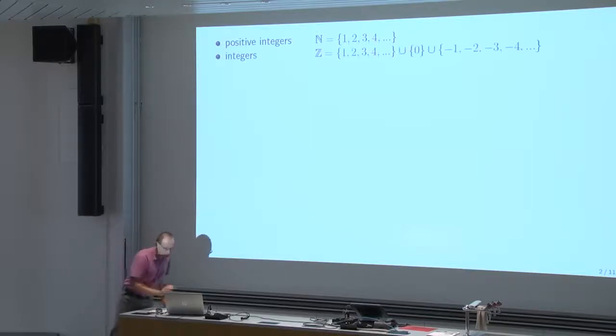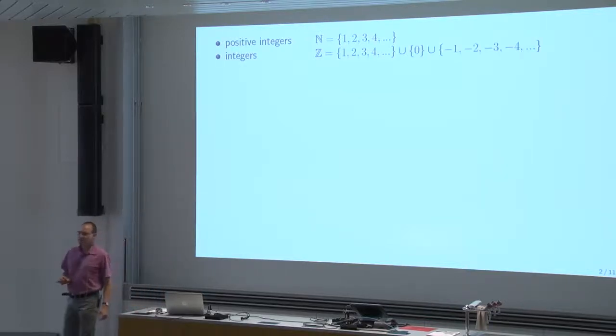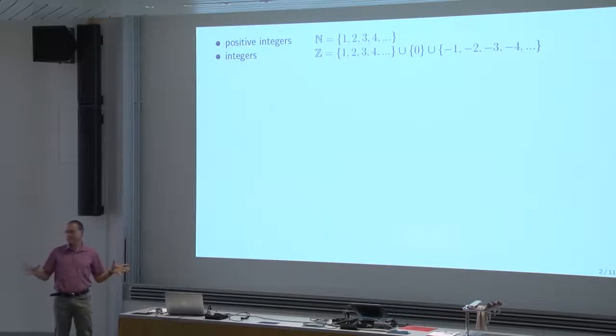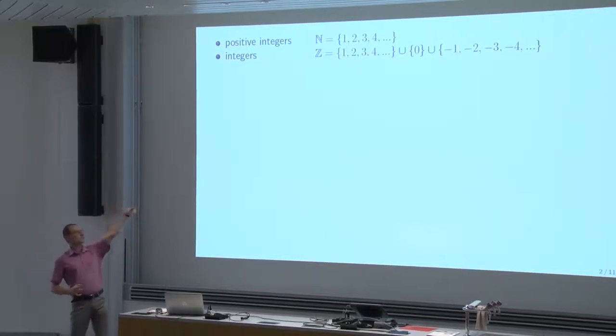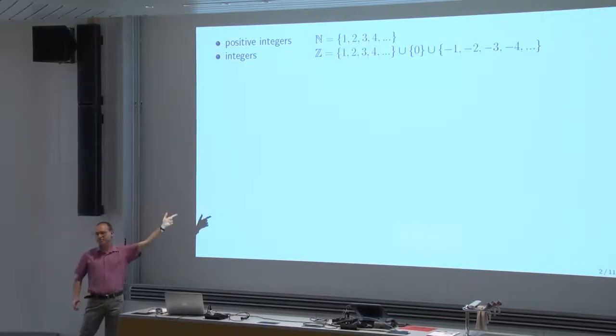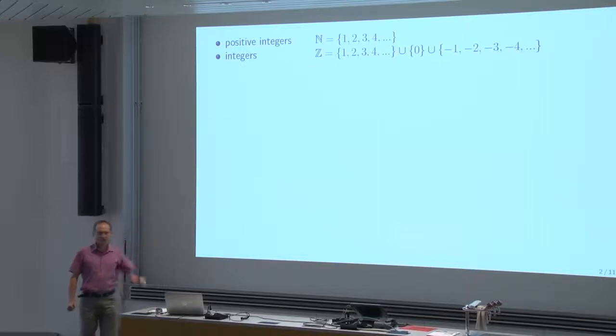The integers are denoted by capital Z — ganze Zahlen — and they consist of all positive integers together with 0 together with the negative integers.